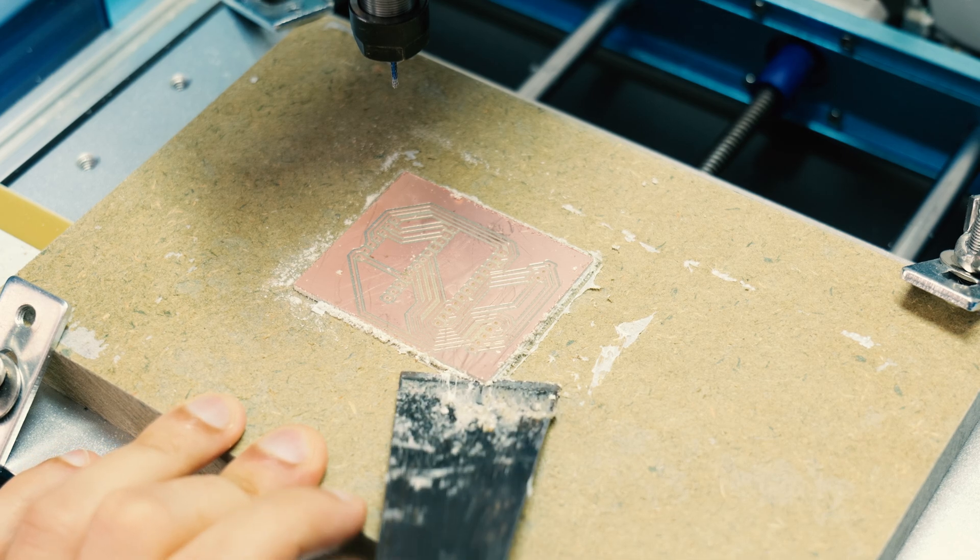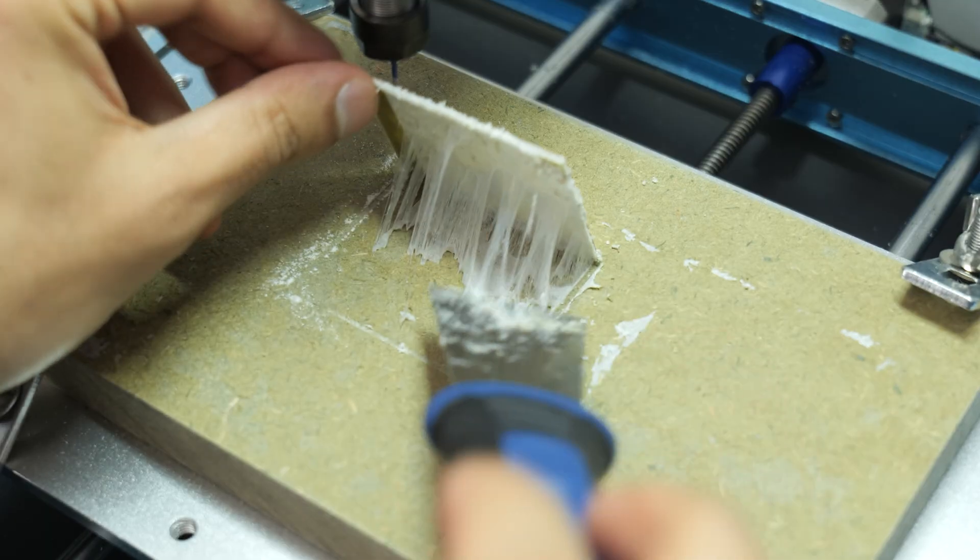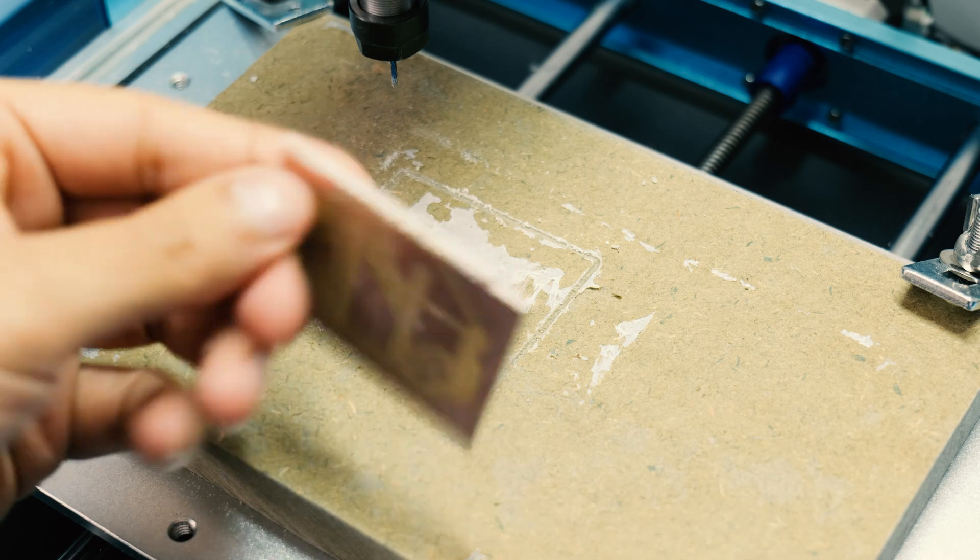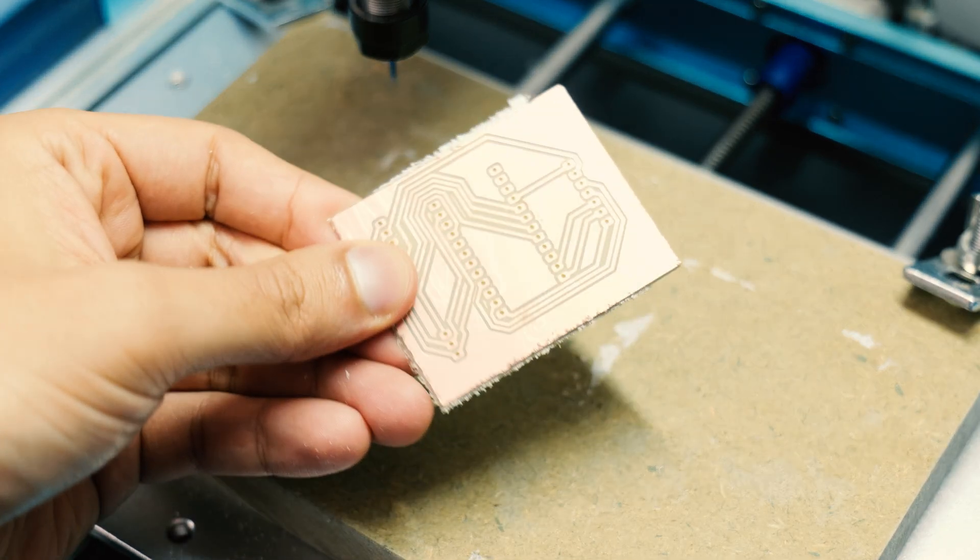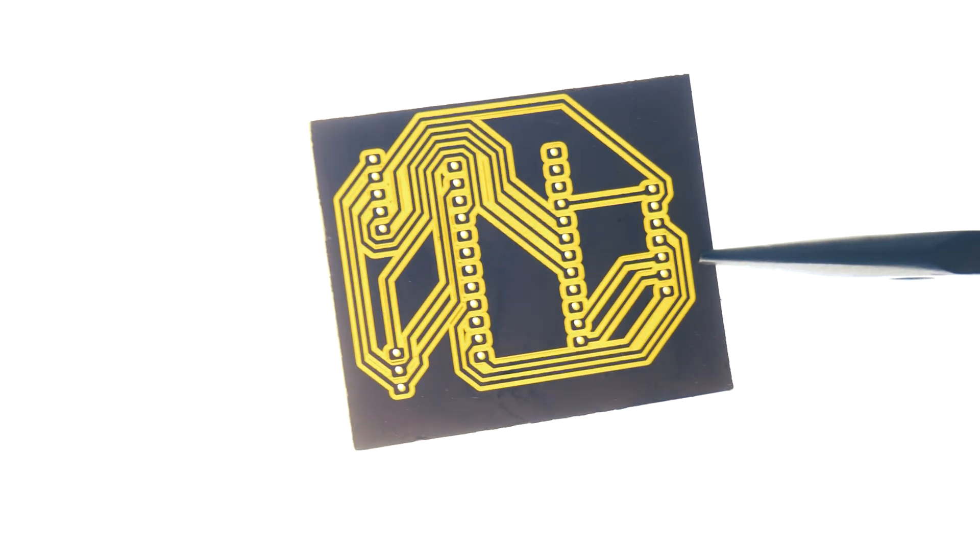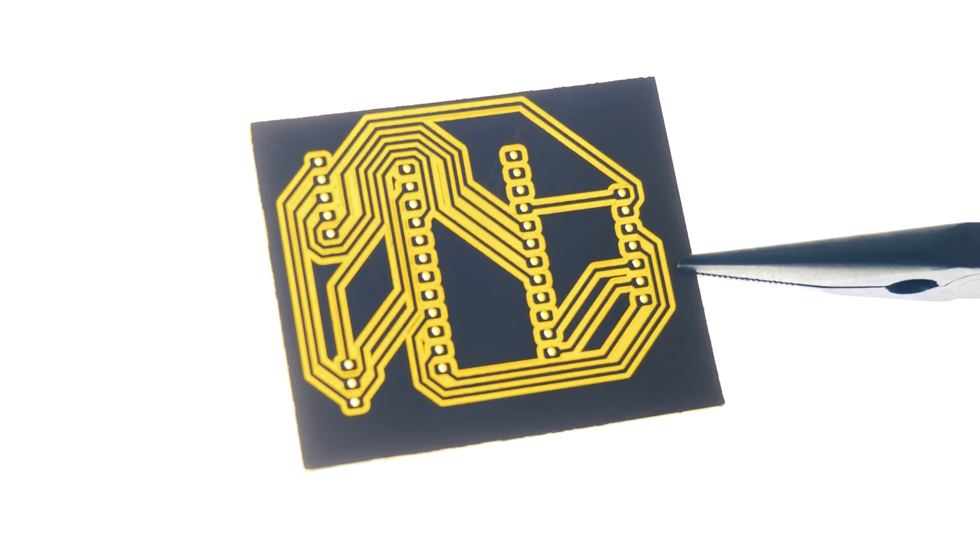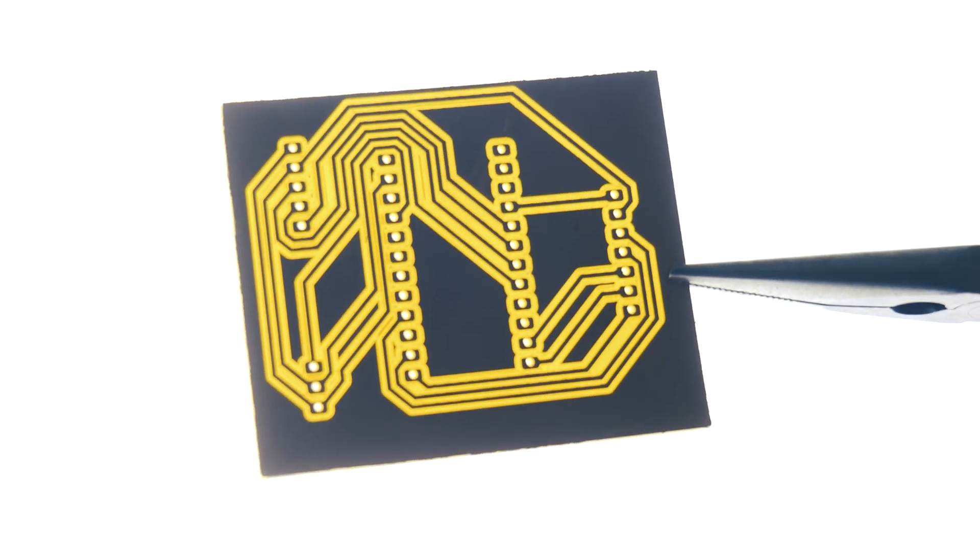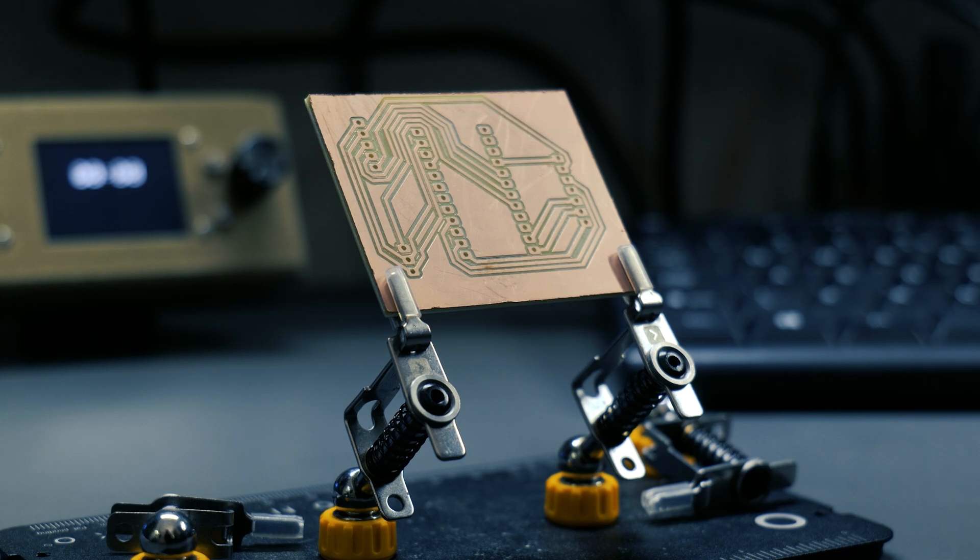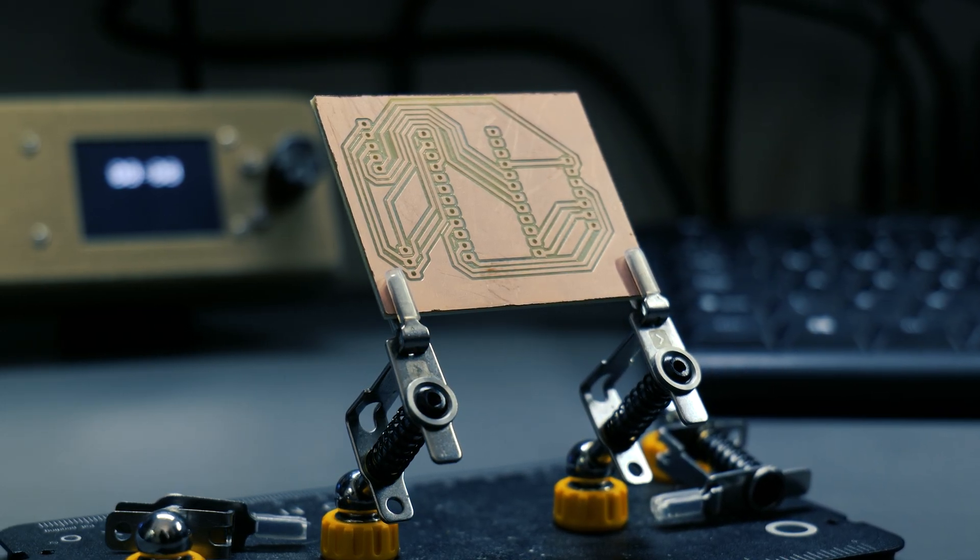Once everything was done I took the PCB off the MDF and gave it a good clean and it was looking absolutely fantastic. The board had really well defined tracks and nice open spaces for pins to go through, so we were on the right track. However, in order to make sure we had actually been successful with this project, it was time to get everything soldered up.